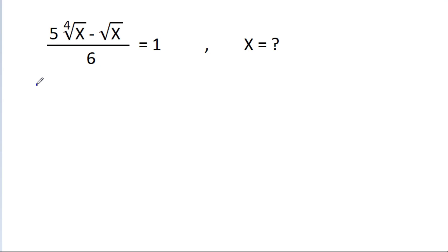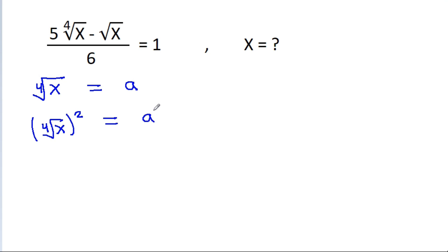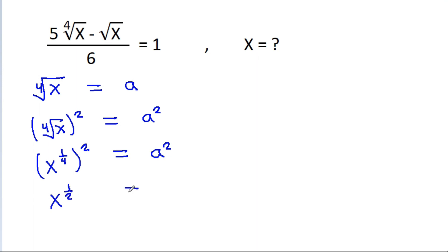So if we take the 4th root of x equal to a, and if we square both sides, then the 4th root of x squared will be equal to a squared. The 4th root of x is x to the power 1 by 4, and squaring gives x to the power 1 by 2, which is the square root of x, equal to a squared.